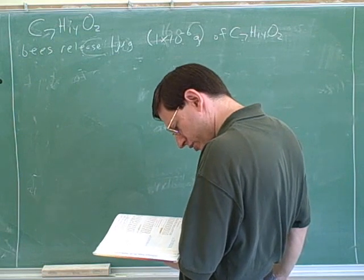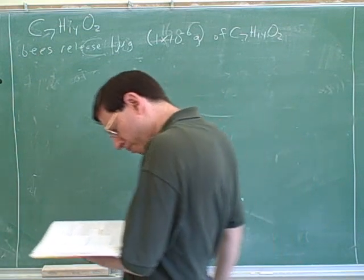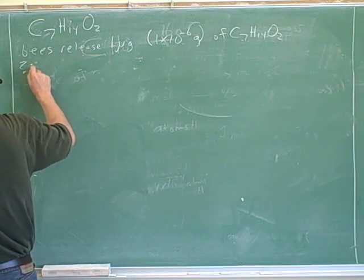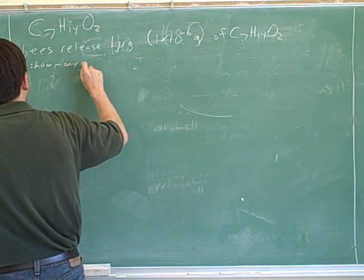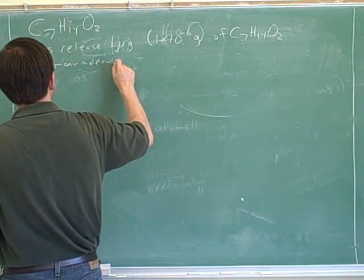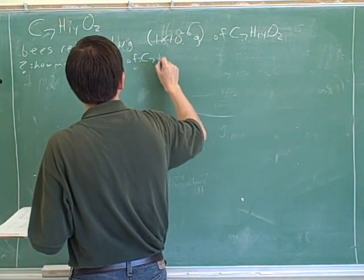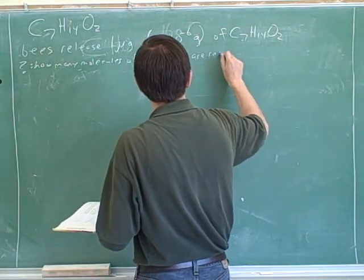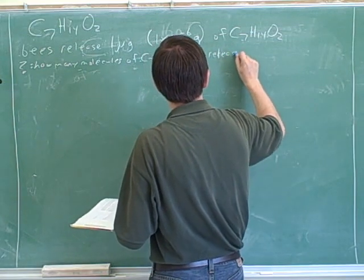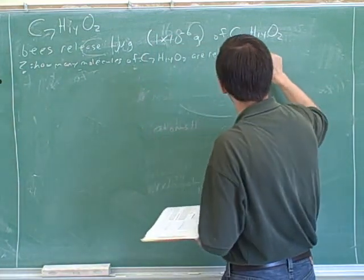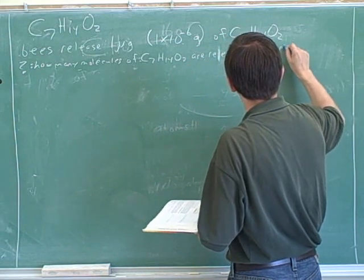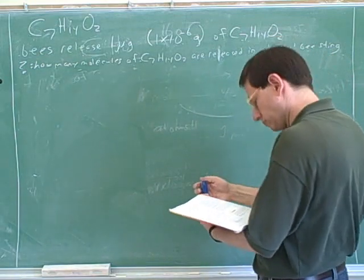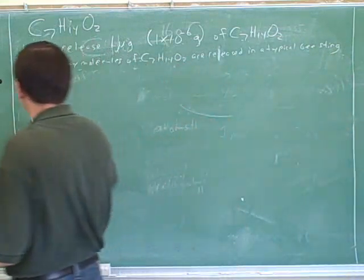In order to attract other bees to join the attack, how many molecules of isopentyl acetate are released in a typical bee sting? How many atoms of carbon are present?